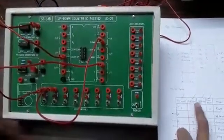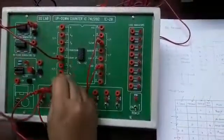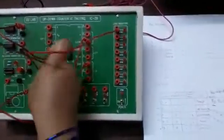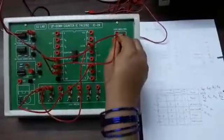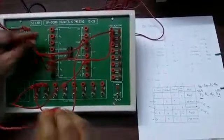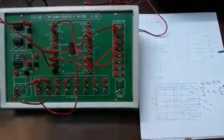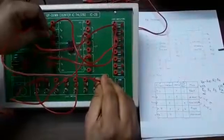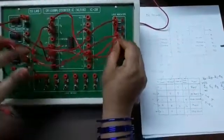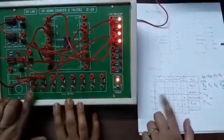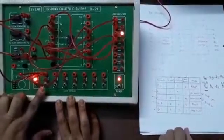Then QC, QB, and QA. Let us verify the operation. Let us see the up count first. Before that, we'll clear the counter.